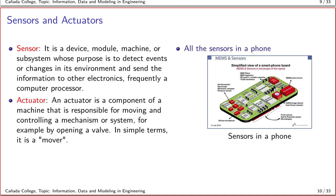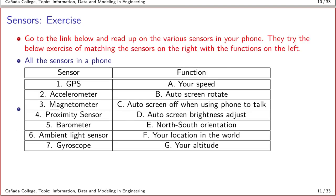An actuator is a component of a machine that is responsible for moving and controlling systems, for example opening or closing a valve. Unlike a sensor, it actually does some kind of mechanical function inside your machine.